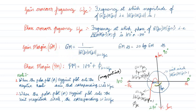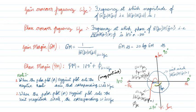Before going to the lecture, let us again refresh what is a gain crossover frequency. Gain crossover frequency is the frequency at which the magnitude of G(jω)H(jω) — the symbol for magnitude — becomes 1. The frequency at which the magnitude becomes 1 is called the gain crossover frequency.